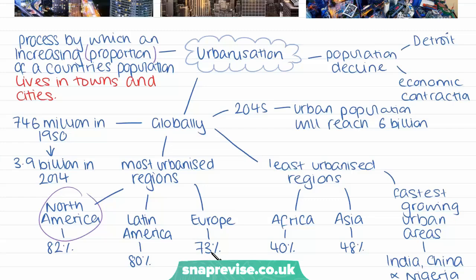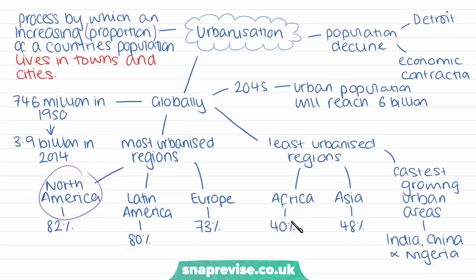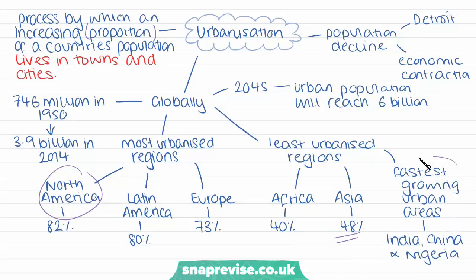In Europe, 73% of populations live in urban areas. In contrast, our least developed regions are also our least urbanised, with Africa only having 40% of their population living in urban areas, and Asia just more than that at 48%. India, China and Nigeria, incorporated in these two groups, still currently have very low urban populations but have the fastest growing urban areas in the world at the moment — they are up and coming urbanisers essentially.